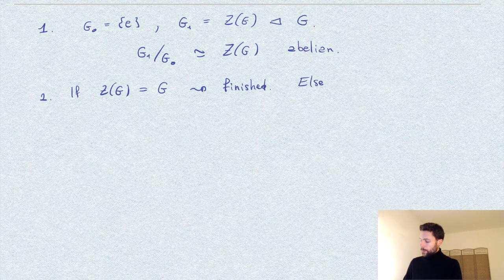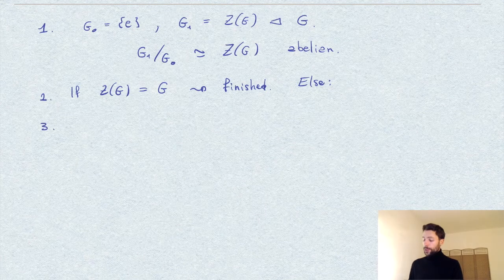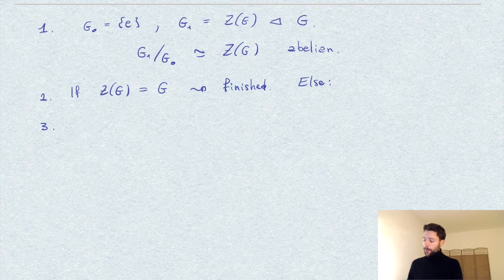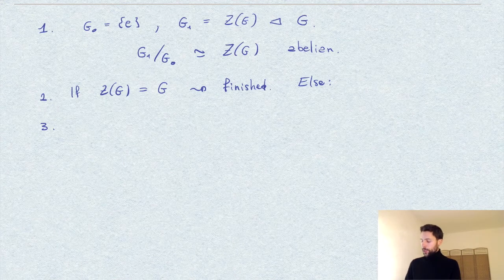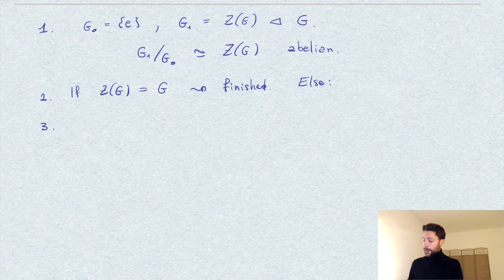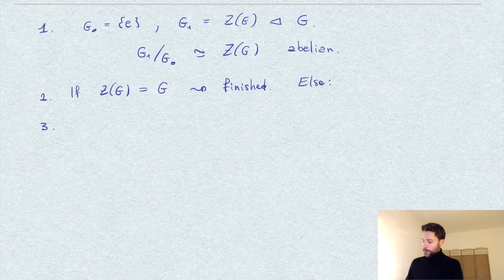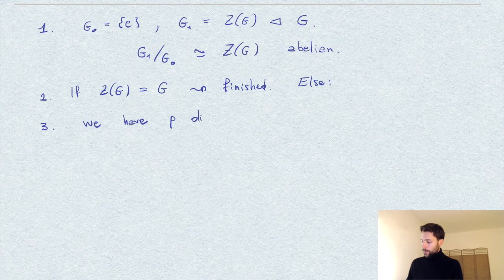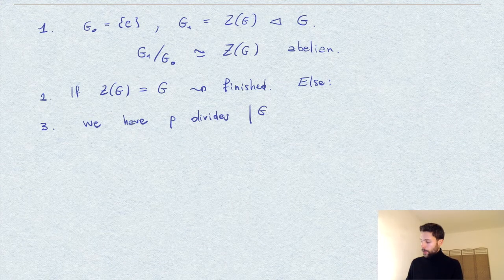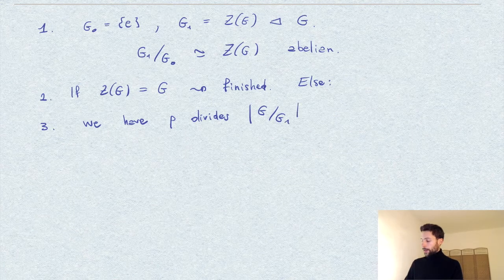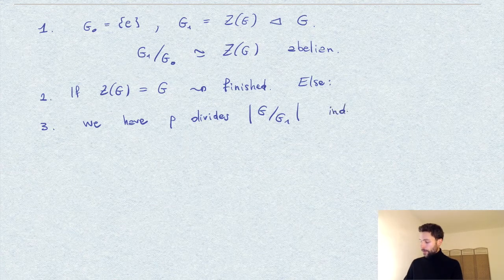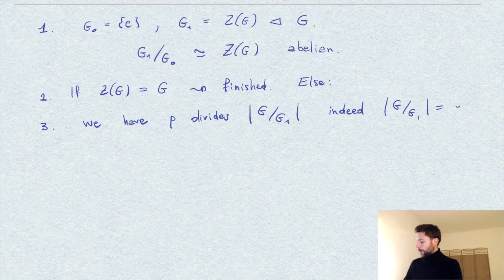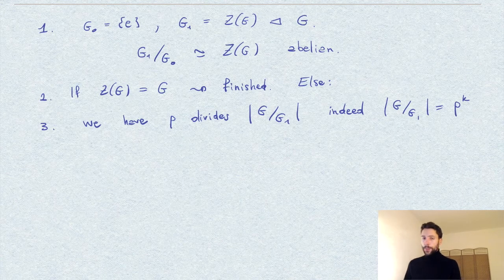Otherwise, we proceed as follows. We observe that the order of the center is also a power of p, because the center is a subgroup of G which is of order a power of p. Therefore, also for the quotient, we have that p divides the order of G over G_1. Actually, this order has to be also a power of p, say p to the power k, for some k at least one.